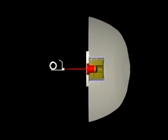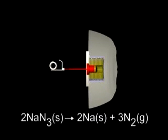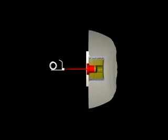The chemical reaction employed is the thermal decomposition of sodium azide, NaN3. Upon heating, sodium azide decomposes rapidly to form sodium metal and nitrogen gas. The reaction is exothermic and rapid once it has begun.